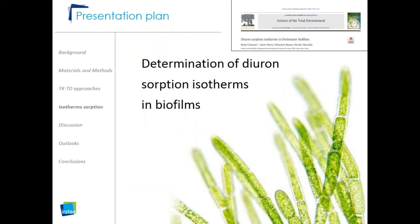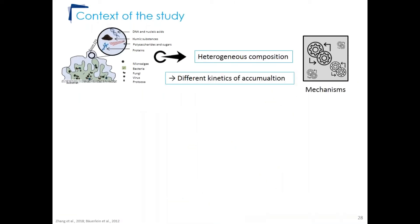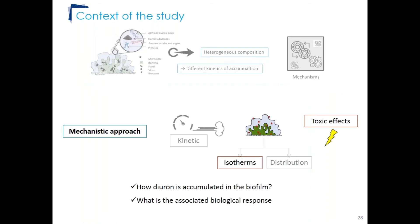The next study concerns the determination of the diuron absorption isotherm in the biofilm. Since biofilm has a heterogeneous composition, different kinetics of accumulation and different mechanisms of absorption exist. A mechanistic approach was used to determine the diuron isotherm in the biofilm — to understand how diuron will be distributed and what the associated biological response is.